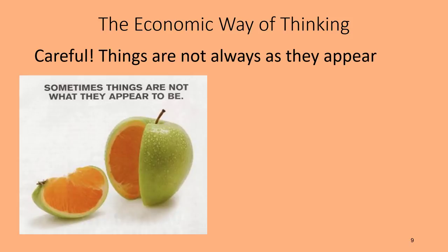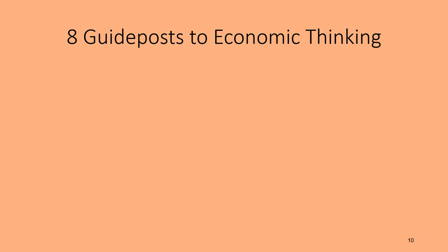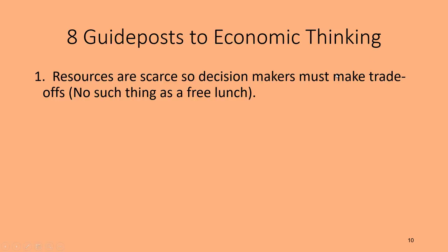Now that we've got basic terms and definitions covered, let's get into the economic way of thinking — one of my favorite parts. This is the philosophy that makes economists see the world a little differently than non-economists. When you look at the world this way, things are not always as they appear. Let's get into the very first guidepost, which we've already highlighted: resources are scarce, so decision makers must make trade-offs.